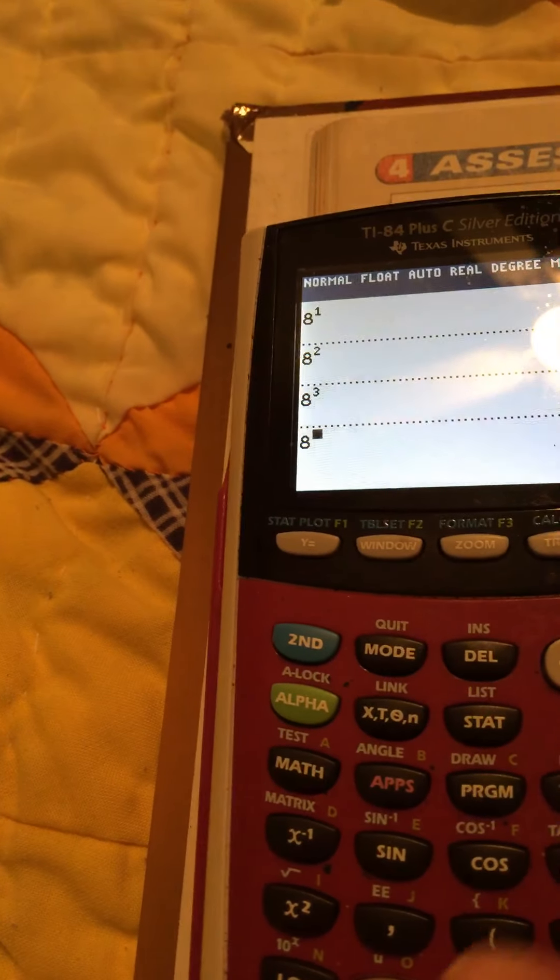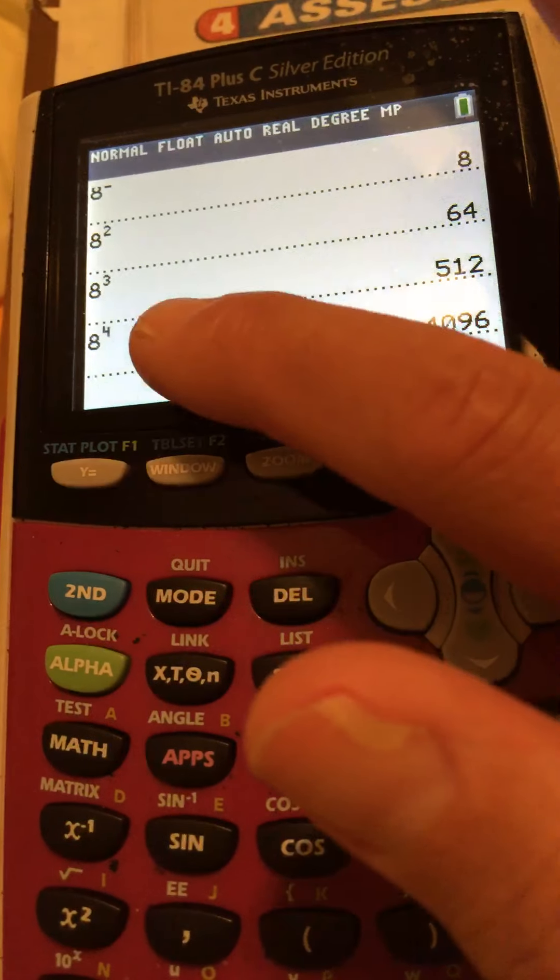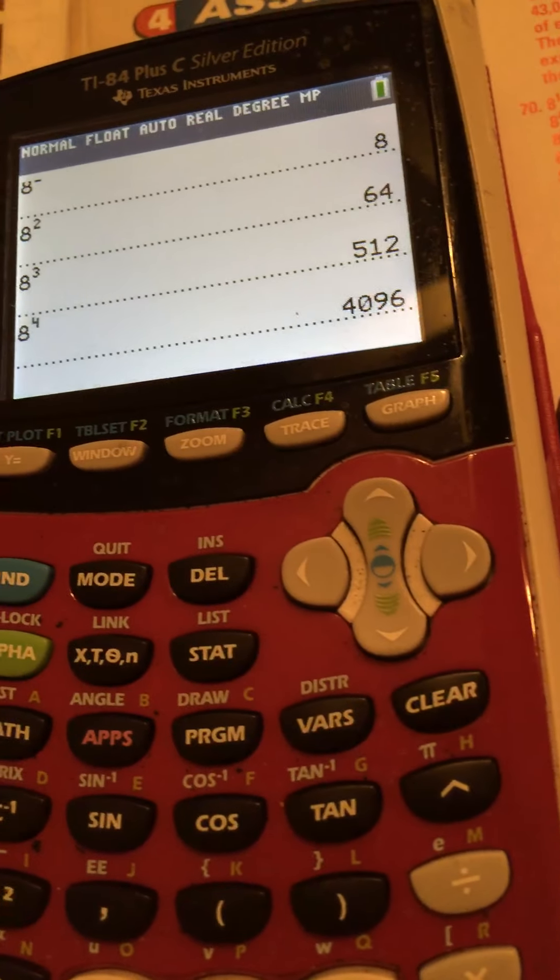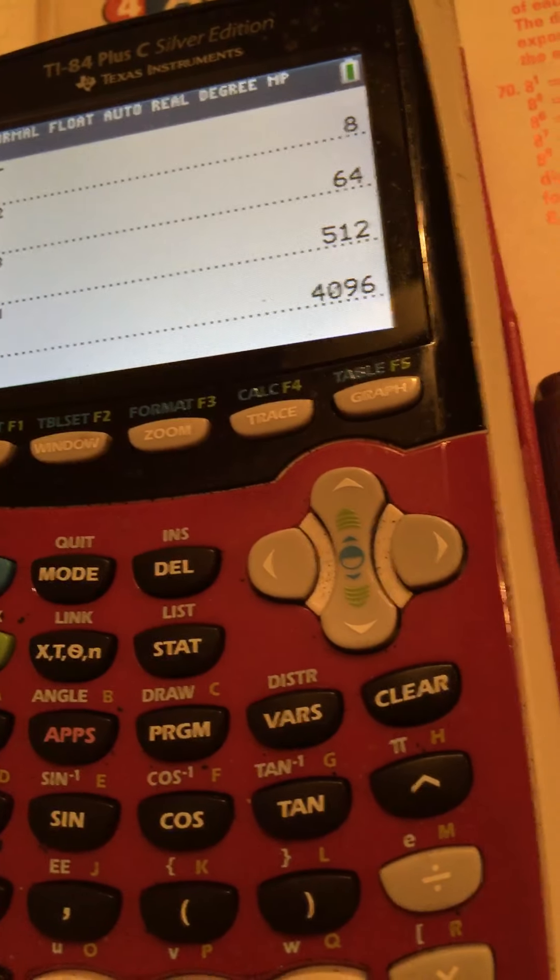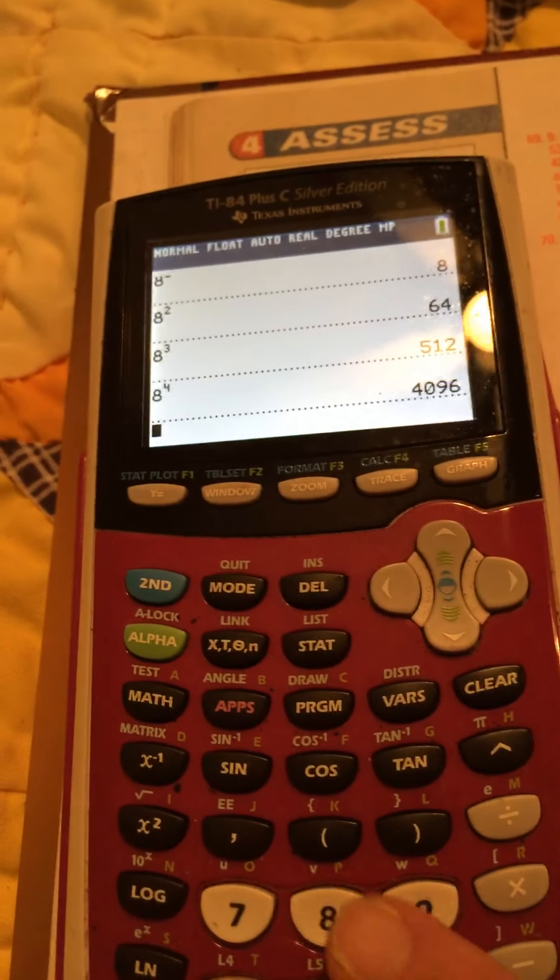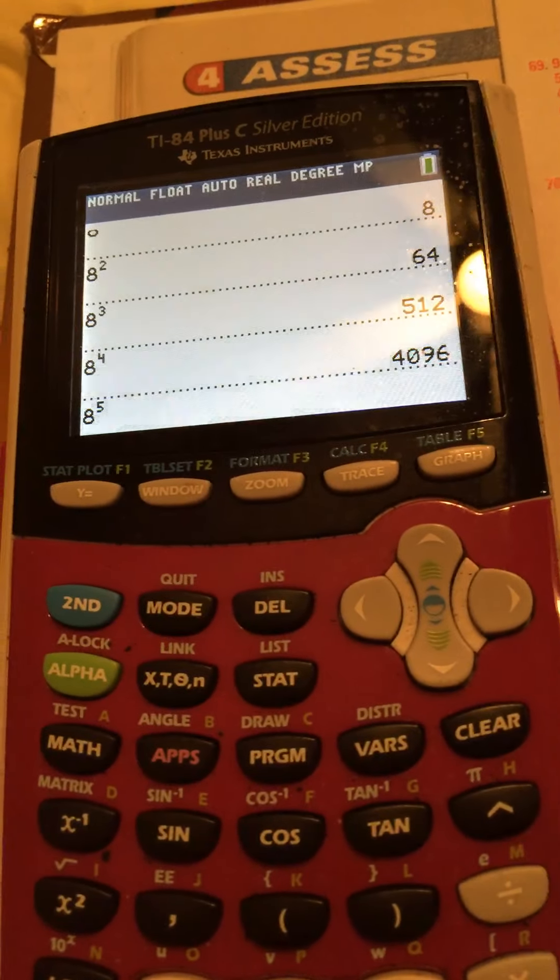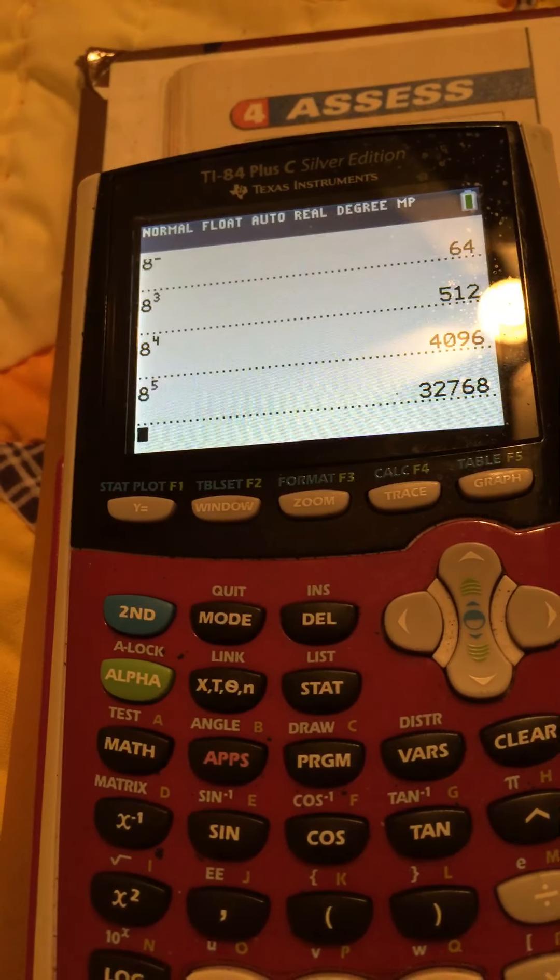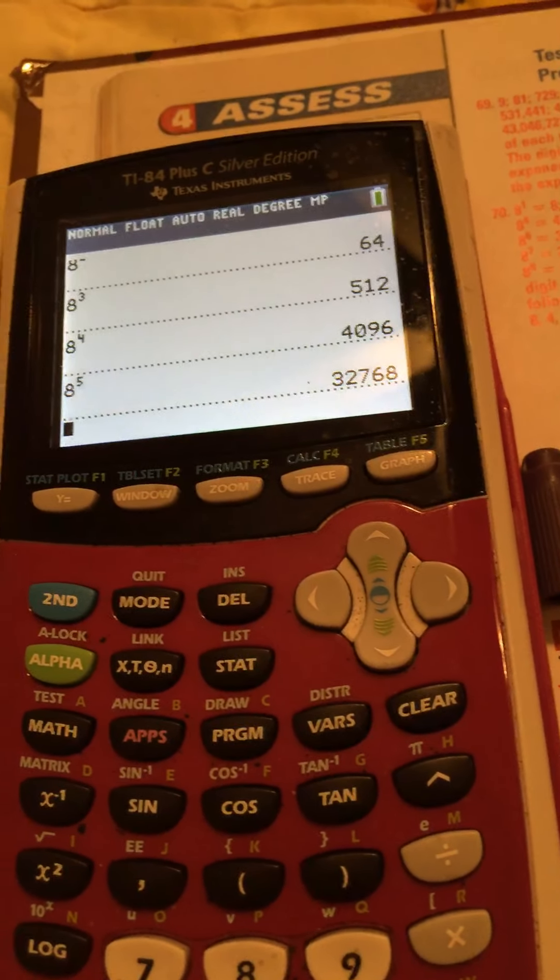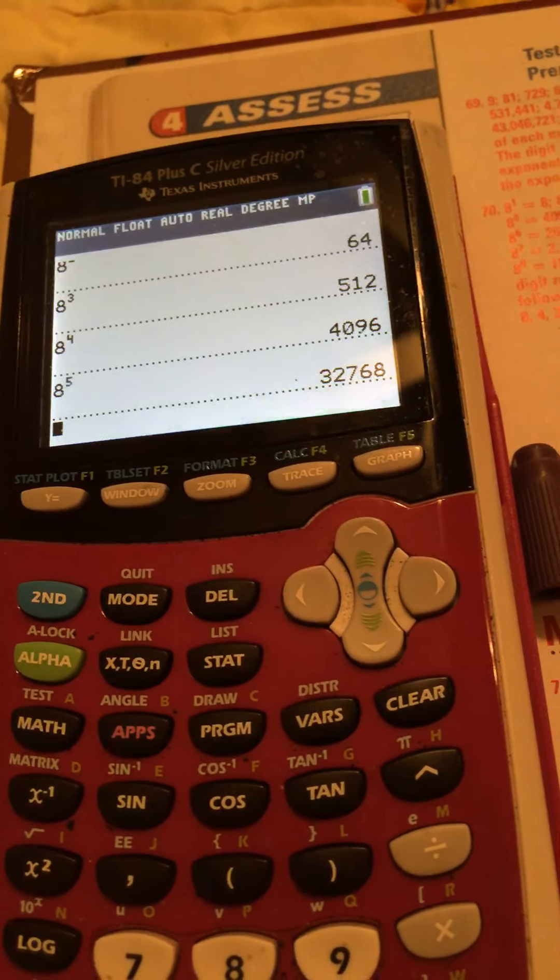Enter. I don't have to arrow down before I hit enter. And it's 4096. Now we're going to do eight to the fifth power. Hit enter. And it is I'm going to make this down just because it's getting too crowded. 32768.